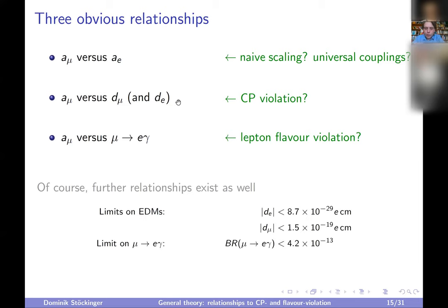Here are the experimental limits to memorize. The limit on the EDM of the electron is 10 to the minus 29 electron centimeters — a very strong constraint on many BSM scenarios. The EDM of the muon limit is 10 to the minus 19, which is actually not very constraining compared to other quantities. There are ideas to measure the muon EDM more precisely, for example at the Fermilab g-2 experiment or at dedicated experiments at PSI. The mu-to-e-gamma limit is 10 to the minus 13, which is very constraining for BSM physics.